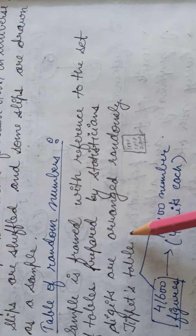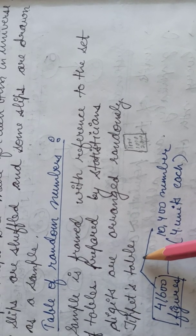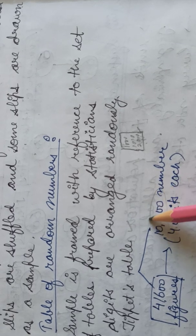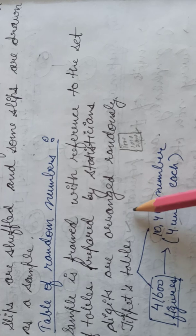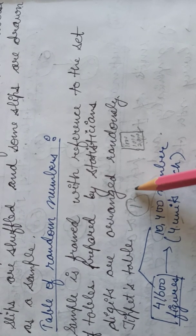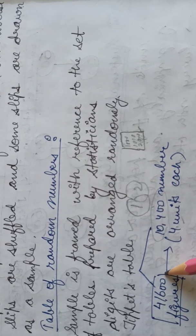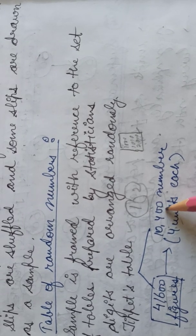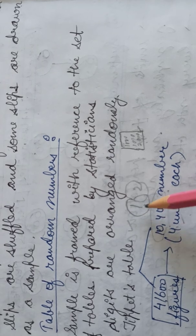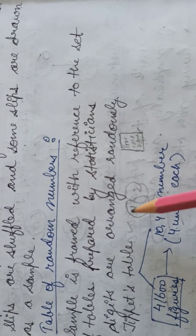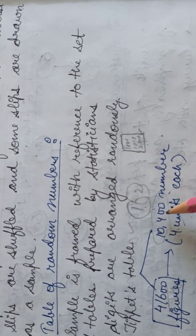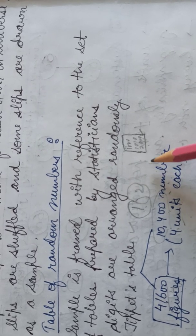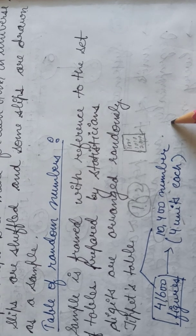One well-known example is Tippett's table, prepared by Tippett. In this table there are a total of 41,600 figures divided under 10,400 numbers, meaning each number contains 4 units. If you divide 41,600 by 4, you get 10,400. Tippett prepared his table in this manner and investigators make use of it. They assign these numbers to various items of the universe, select certain numbers, and the units assigned those numbers are taken as the sample from the population.